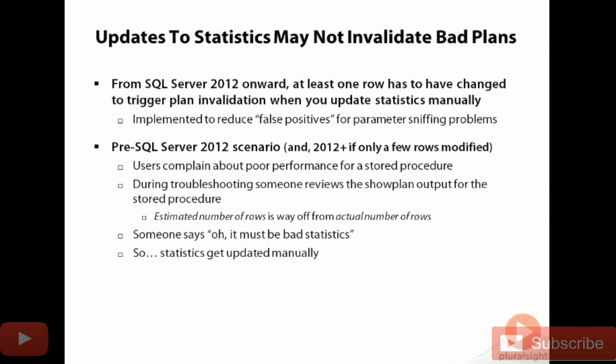When somebody executes the procedure the next time, there's no plan in cache, which means one needs to be generated, and it's going to be generated based on the new parameters being used. Those are going to be sniffed, the plan's going to be generated based on those values, and you're probably going to get a better plan. So the problem seems to go away, giving you positive reinforcement that updating the stats fixed the problem.